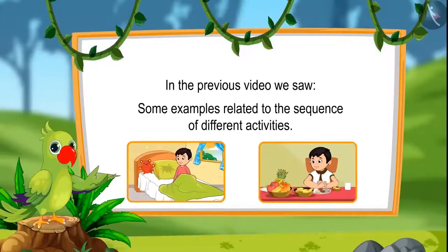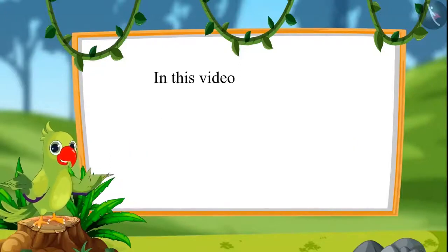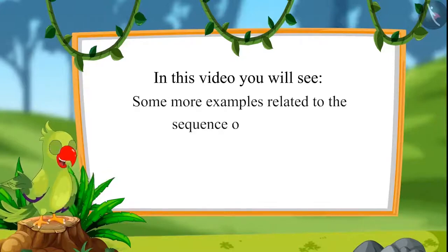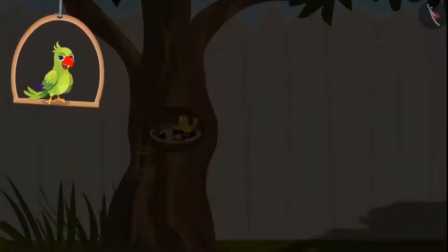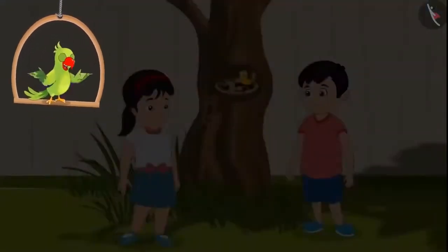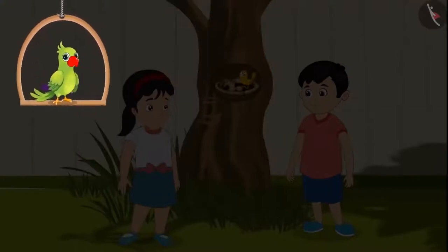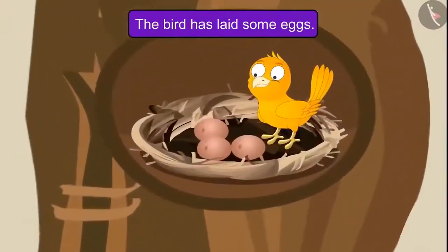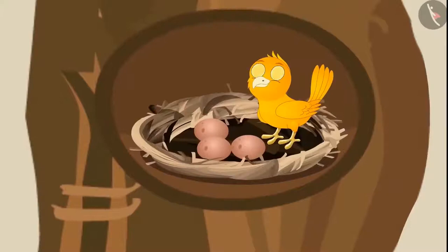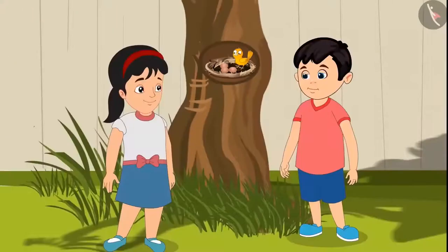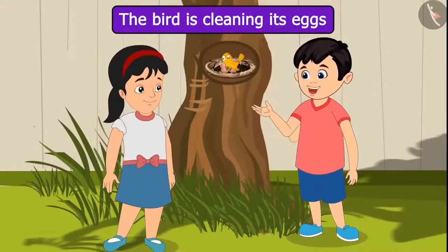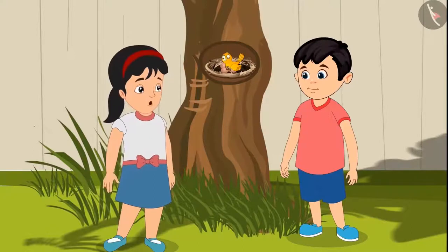Hello children. In the previous video we saw some examples related to the sequence of different activities. In this video we will see some more examples. A bird has nested on a tree near Chotu and Pinky's house. They both see the birds every day. Today Chotu says 'Hey Pinky look — today this bird has some eggs in its nest, and they look so cute.' They watch the bird cleaning its eggs and sitting on them, keeping them warm.